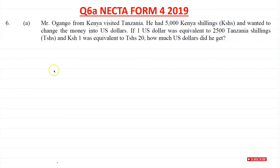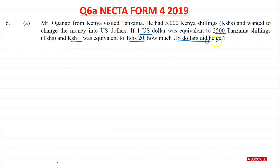Welcome to this tutorial. We're going to solve question 6 from Nectar 2019 form 4 math paper. We start with question A, which is to do with currency conversion. We're told Mr. Ogango from Kenya visited Tanzania. He had 5,000 Kenyan shillings and wanted to change the money into US dollars. If one US dollar is equivalent to 2,500 Tanzanian shillings and one Kenyan shilling was equivalent to 20 Tanzanian shillings, how much US dollars did he get?